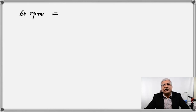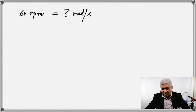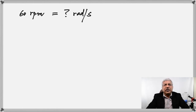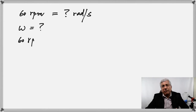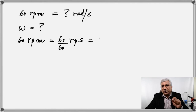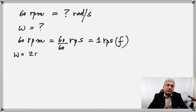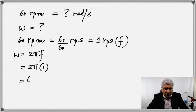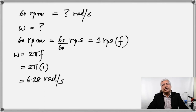Let's assume that something is rotating at 60 RPM and we're asked to calculate its angular speed in radians per second. Angular speed is omega. First, change rotations per minute into rotations per second: 60 divided by 60 gives 1 rotation per second — that is the frequency. Once you have the frequency, calculate angular speed using omega equals 2 pi times frequency, which is 2 pi times 1, giving 6.28 radians per second.